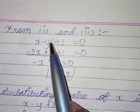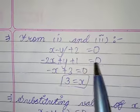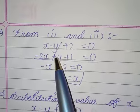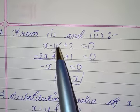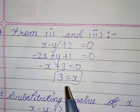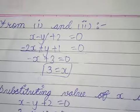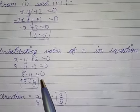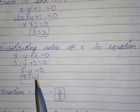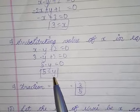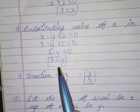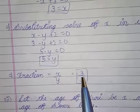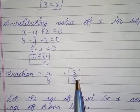Since the coefficients of y are equal, we can cancel directly without multiplying. We get x is equal to 3. Substituting x equals 3 into equation 1, we get y is equal to 5. So the fraction is x over y, which becomes 3 by 5.